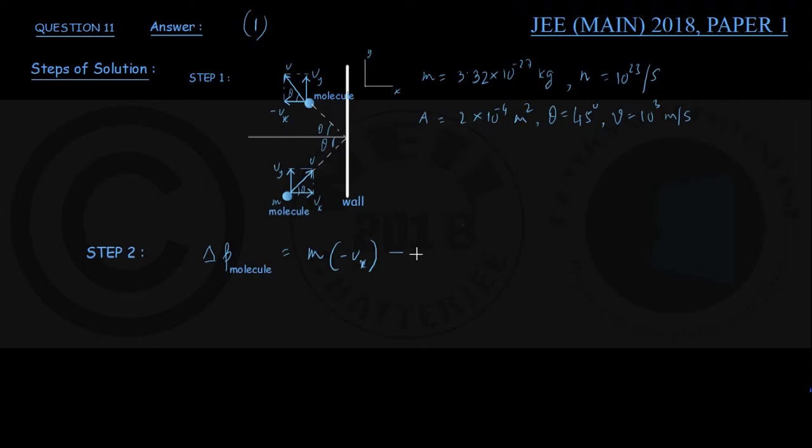...that is m × Vx, coming out to be -2mVx. Let me write it somewhere on the figure: Vx = V cos θ. It is clear from this figure - the x component is V cos θ. Now that was for the momentum change per collision of the molecule.